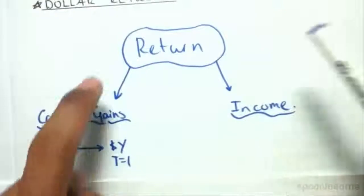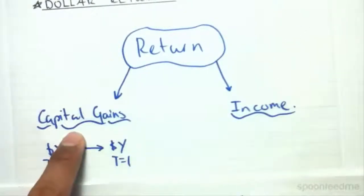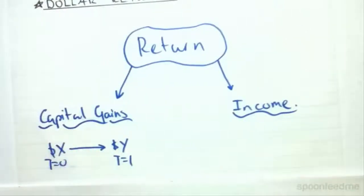So these are the two subsets of return: we get capital gains and we get income. What we do is we add these two things together and our result will be the return.